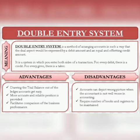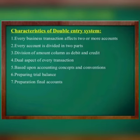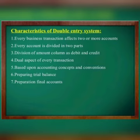Now, characteristics of a double entry system: Every business transaction affects two or more accounts. Every account is divided into two parts, with division of the amount column as debit and credit. There is a dual aspect of every transaction. It is based upon accounting concepts and conventions.